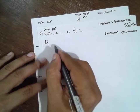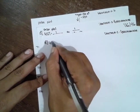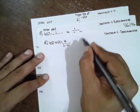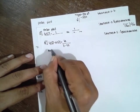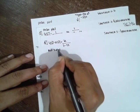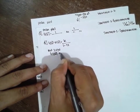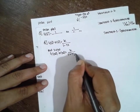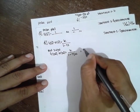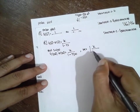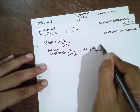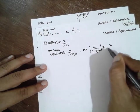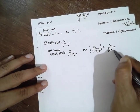Next problem. G(s)H(s) is equal to K divided by (1 minus Ts). Put s equal to jω. G(jω)H(jω) equals K divided by (1 minus TJω). Go for magnitude. Magnitude equals K divided by root(1 plus ω²T²).